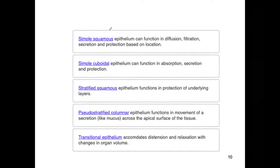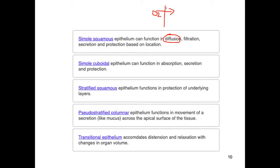For epithelium that functions in diffusion and filtration: diffusion is when something passes through a membrane from one side to the other. It's easier for oxygen to pass from outside to inside if it's just one cell layer thick — that's simple squamous. Simple squamous epithelium is found in the alveoli of the lungs to allow for gas exchange of oxygen and CO2.